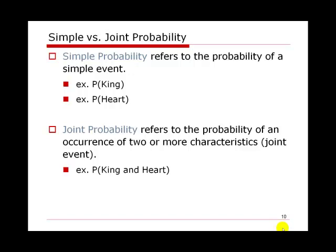Depending on the event, a probability can be a simple probability or a joint probability. Simple probability refers to the probability of a simple event — for example, what is the probability of drawing a king, or drawing a heart? If we look at whether we draw a heart and a king together, that involves two characteristics, making it a joint event with a corresponding joint probability.